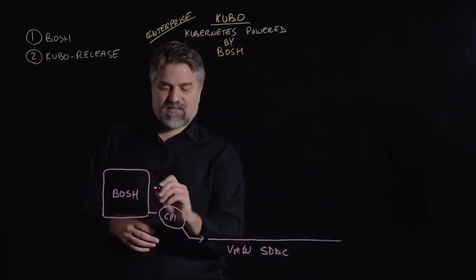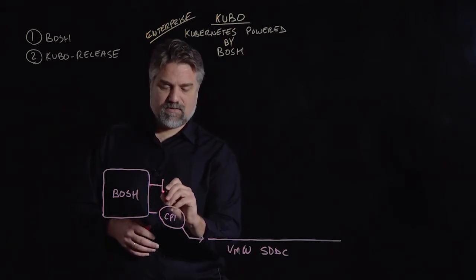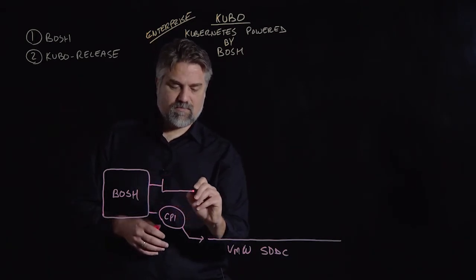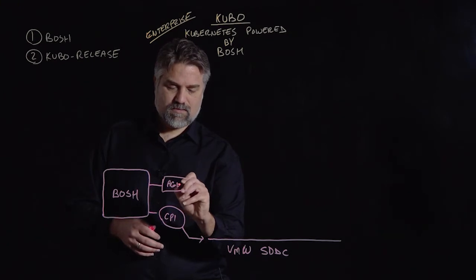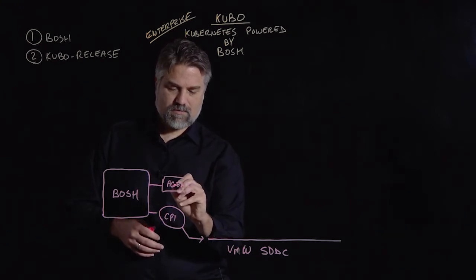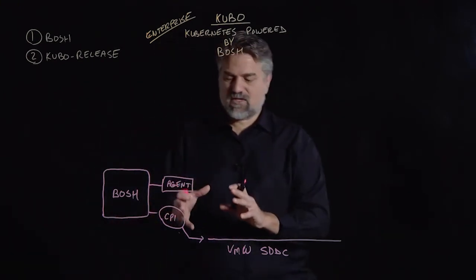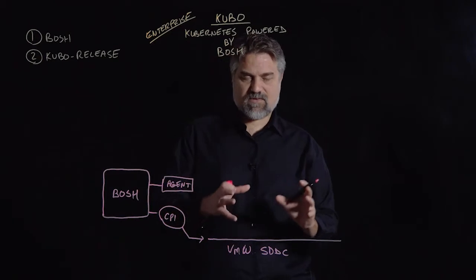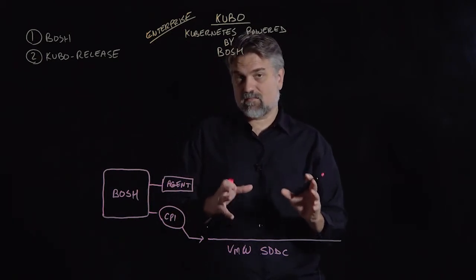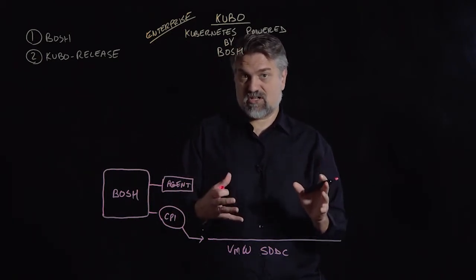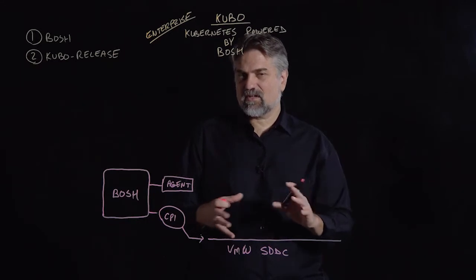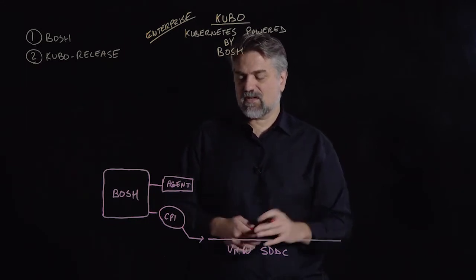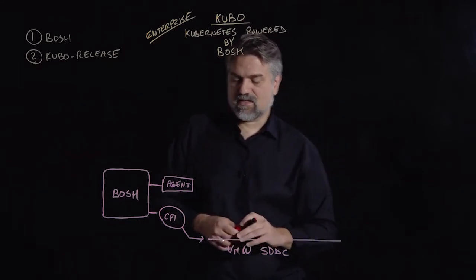In addition to the CPI, BOSH has another component called a BOSH agent. The agent is something that's going to be embedded in every VM that BOSH deploys to instantiate our Kubernetes system. This is going to allow us to do a couple of things we'll talk about when we get to the day two side of this.